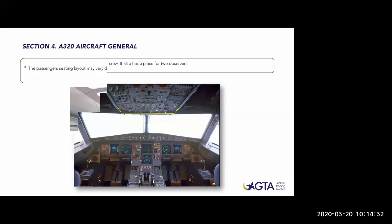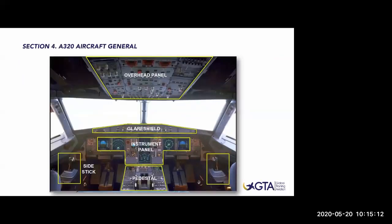This is the cockpit - the part we are most interested in. It's designed for two crew members and also has place for two observers, meaning two pilots and two jumpseaters. We all know the layout: the overhead panel on top, the glareshield below it - which we'll be paying attention to today - the instrument front panel with the screens we use during flights, the pedestal with the thrust levers, and the side sticks used to fly the aircraft via the fly-by-wire system.